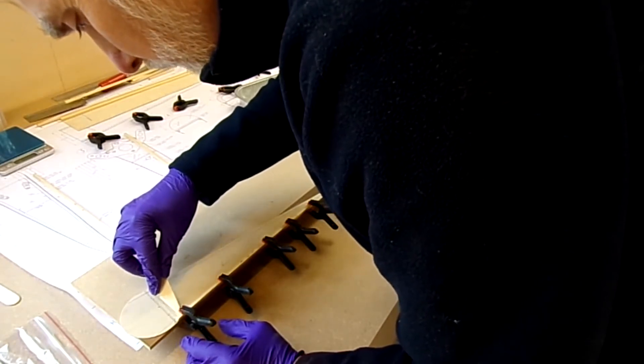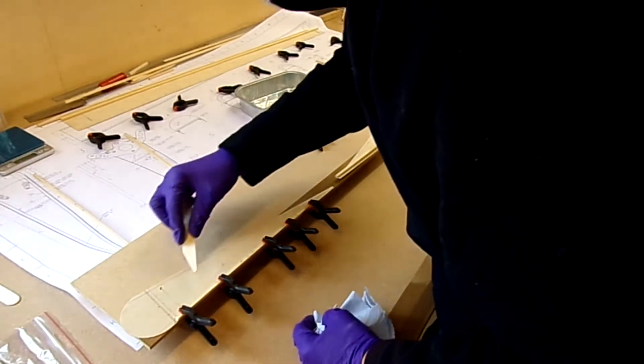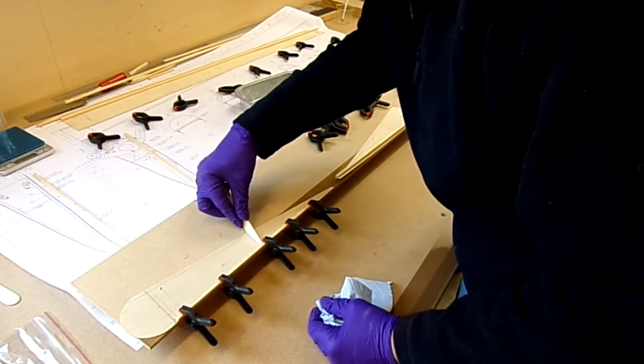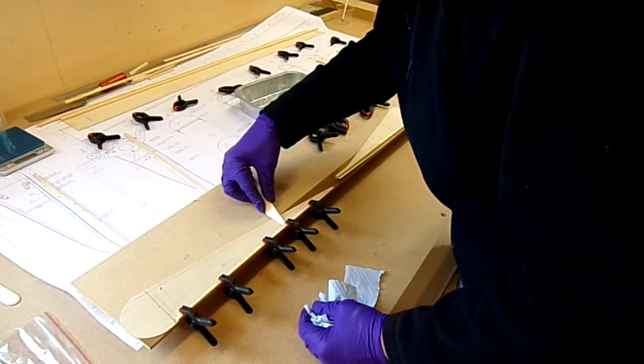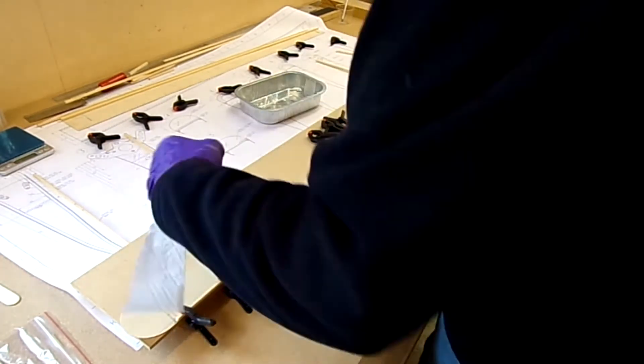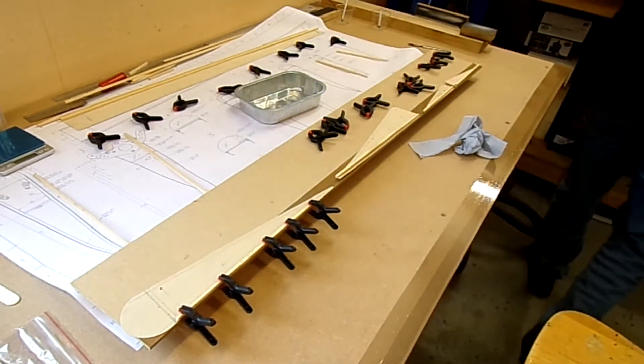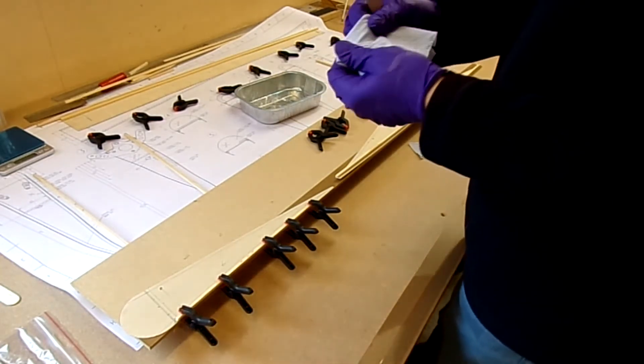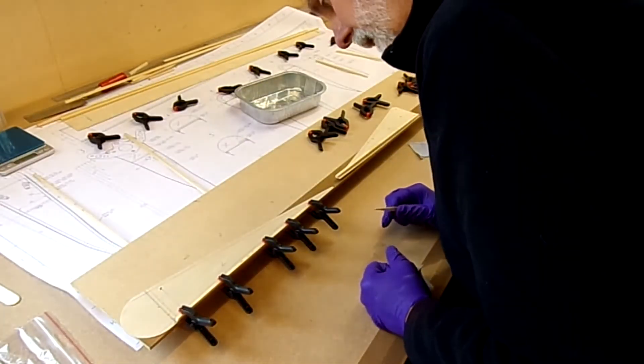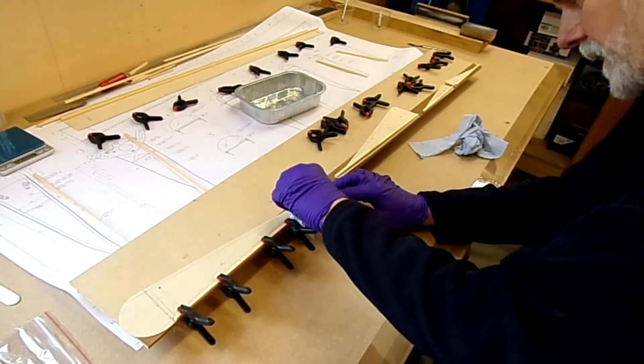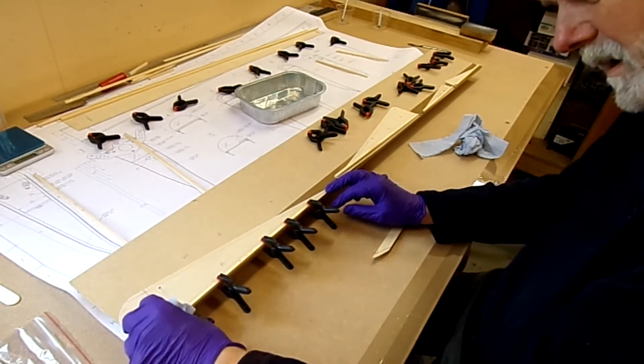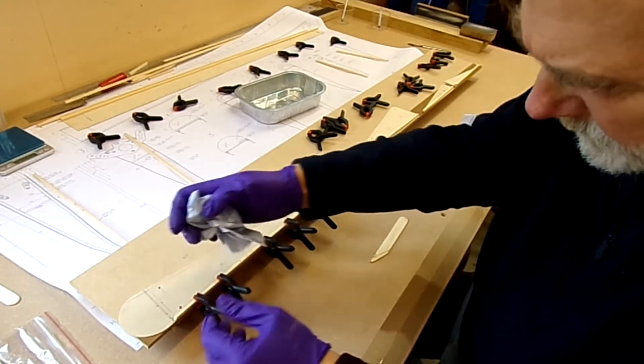I'm just going to go along with my little stick thing here just to remove that excess resin, squeeze down, and then a little bit of tissue. Rub along like that and we'll take off the excess from the outside.